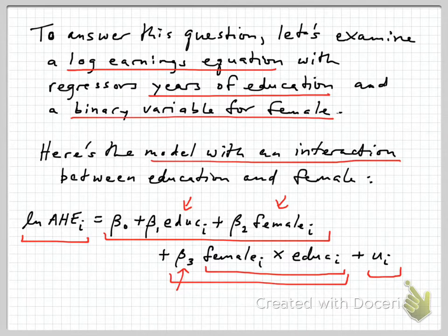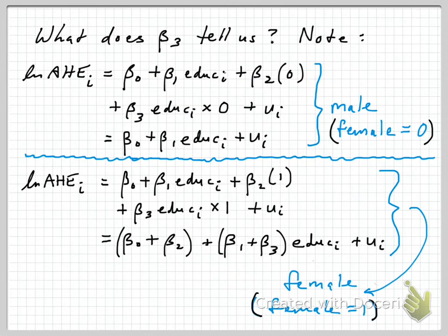This is easy to implement in R or other statistical software. Now, since we've added this extra term with this extra coefficient beta 3, we'd like to know what it tells us.